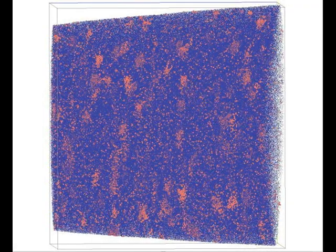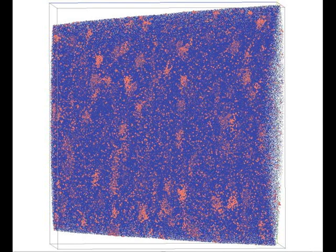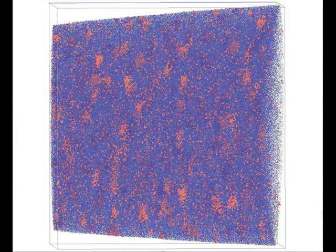This is a 3D atom probe sample. It's an iron alloy. Most of the atoms are iron, shown here in blue. We take those away, and these are the minority components that are left.